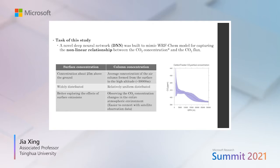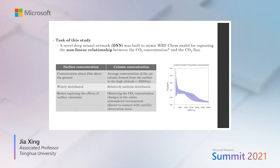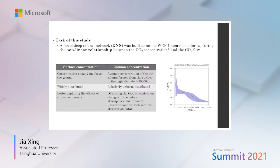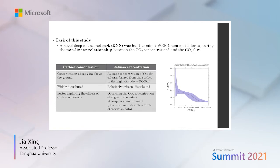We want to set up a deep neural network to mimic the WRF-Chem model and capture the non-linearity between CO2 emission and concentration. In this study, we set up two types of CO2 concentration: surface concentration, which is high because it's close to the source and declines with height, and column concentration, which is the total across the whole vertical profile as observed by satellite. Both concentrations are set as labels for our model.